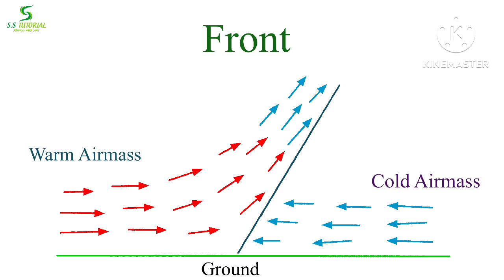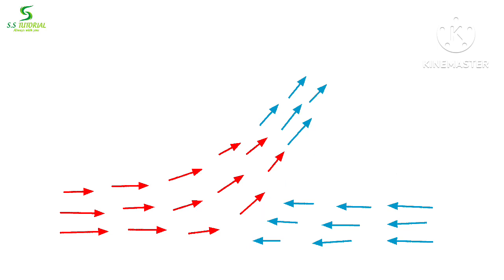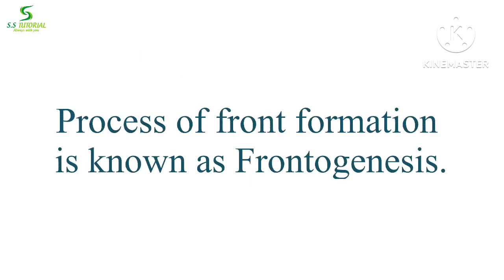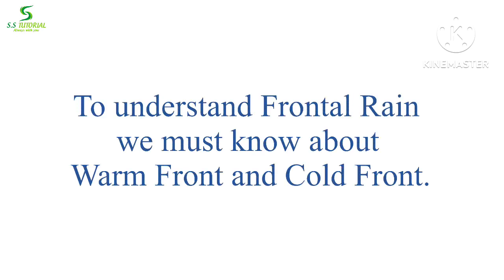Now let's learn about front. A front is nothing but an imaginary line where a warm air mass and a cold air mass meet together. In other words, the imaginary boundary which separates warm air mass from cold air mass is termed a front. There are three types of front: warm front, cold front, and occluded front. The process of front formation is called frontogenesis.